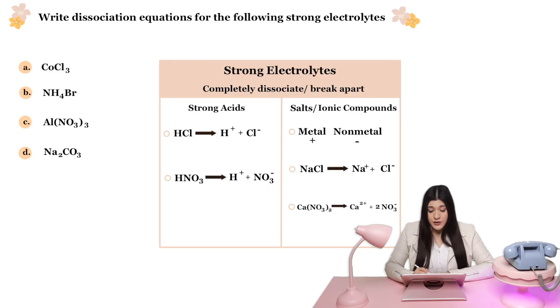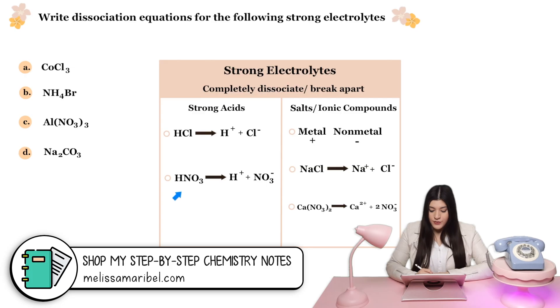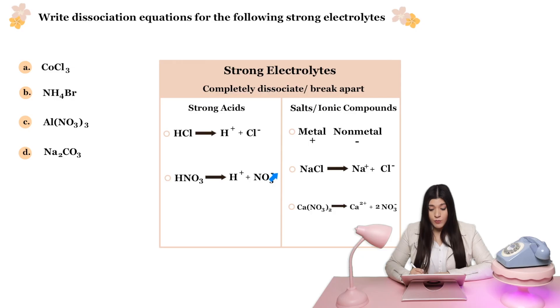So a type of strong electrolyte is a strong acid or a salt. And you'll notice that all of these are types of ionic compounds. A strong acid is something like HCl. So in this case, what would happen since this completely dissociates, it would break apart into its separate ions, which is H+ and then chlorine with its charge, so a negative one charge. Same thing goes for this strong acid, nitric acid. I have hydrogen, so it's H+. I have that nitrate ion, so it's NO3 with a negative one charge.